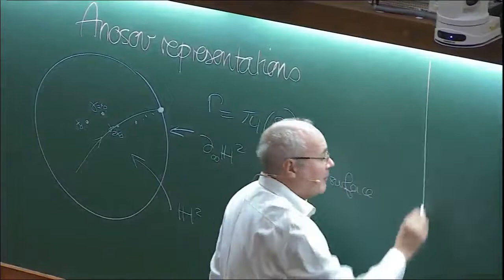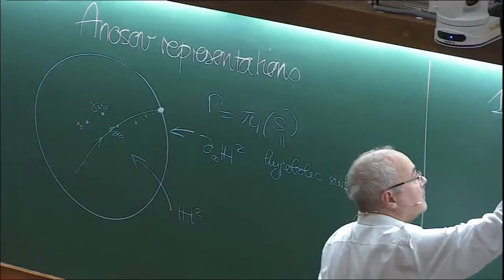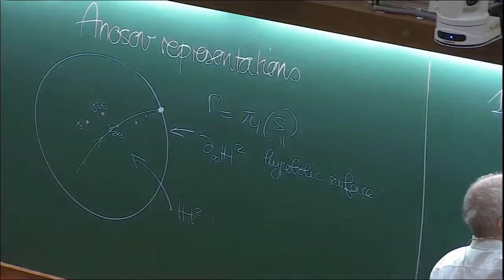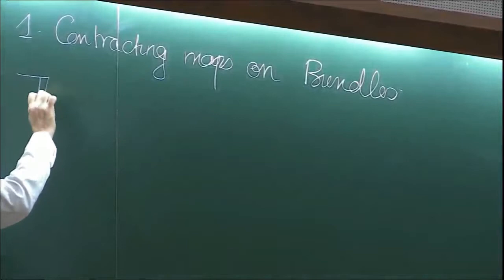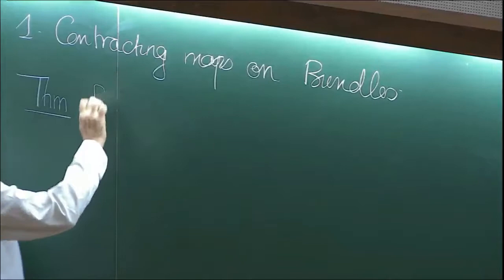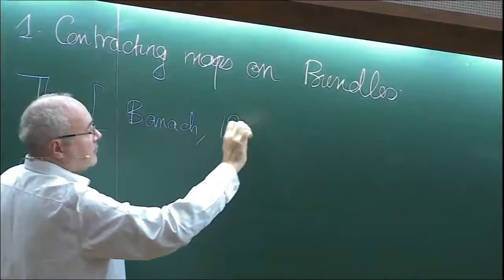I'm going to start with a preliminary about contracting maps on bundles. Let's start with a very famous theorem that you all know, and I guess you all appreciate its importance. It's actually due to Banach, and it's 1922. If x is a complete non-empty metric space,